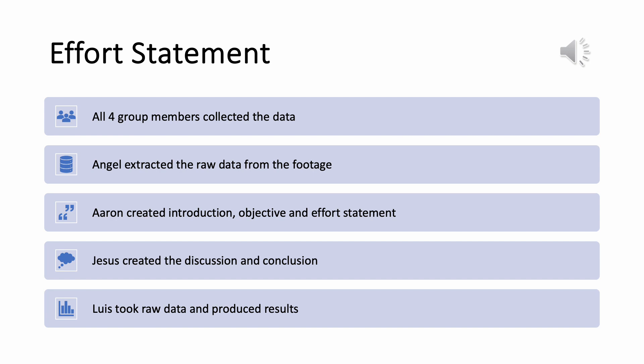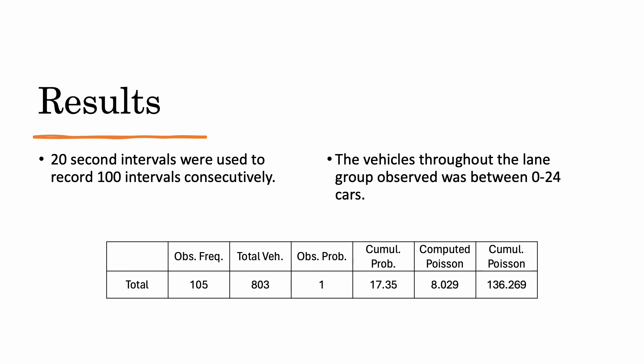The data was recorded in intervals of 20 seconds for a total of 100 intervals. The intervals were grouped based on the number of cars, which determined how frequent the number of cars reappeared in the data. The vehicle frequencies were between 0 and 24 vehicles. A total of 803 vehicles were observed throughout the 100 intervals.